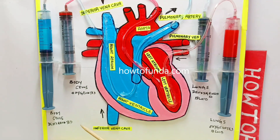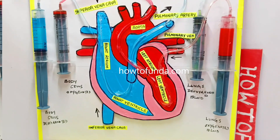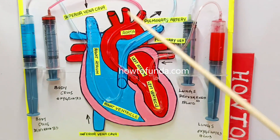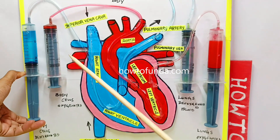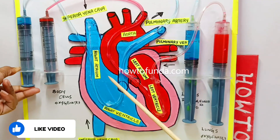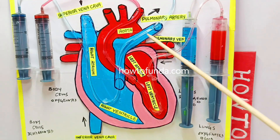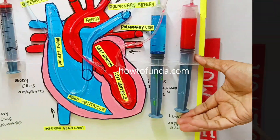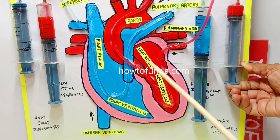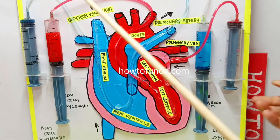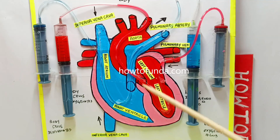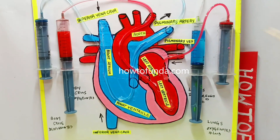Now we are going to demonstrate how this model really works using these syringes. We are trying to send the deoxygenated blood to the heart and from there to the lungs. Whenever we push the syringes, the entire flow of deoxygenated blood happens from right atrium to right ventricle, from there to pulmonary artery, and again it sends to the lungs. When we push this other syringe, the oxygenated blood goes to left atrium, then left ventricle, then aorta, and from there to the human body cells. That is how the entire process of the heart working model really works.